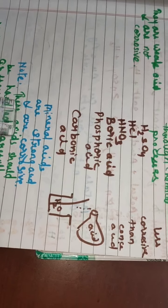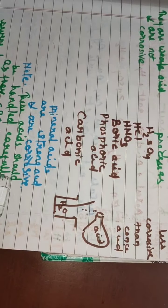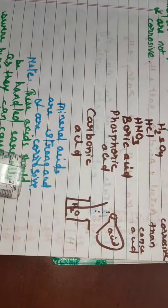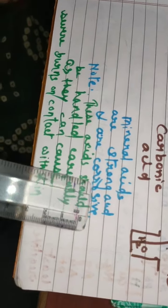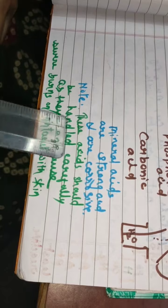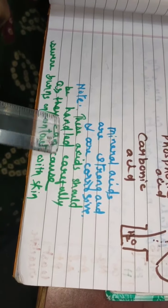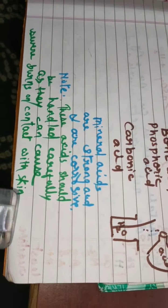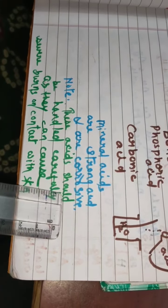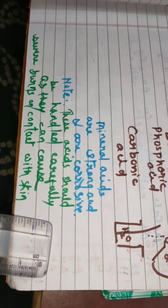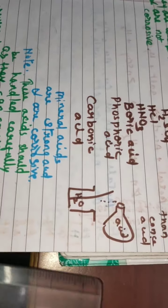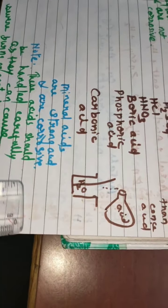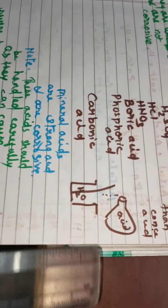Mineral acids are strong acids and are corrosive. Means if they fall somewhere, they leave marks there. These are strong acids and can also damage any object. Therefore these acids should be handled carefully as they can cause severe burns on contact with skin. That is why when we go to the lab, we should take precautions so that no acid falls on our skin. That is why experiments are done in the presence of a teacher, and aprons are also recommended to be worn.